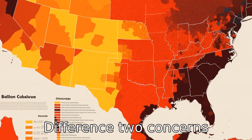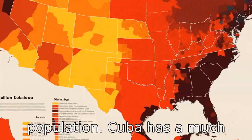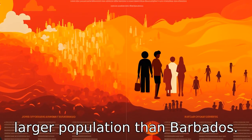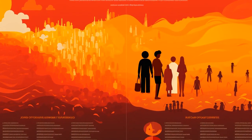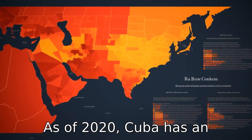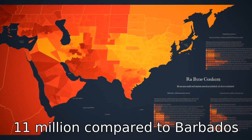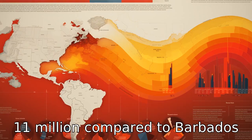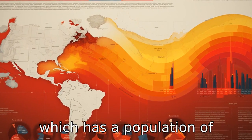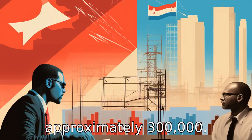Difference 2 concerns population. Cuba has a much larger population than Barbados. As of 2020, Cuba has an approximate population of over 11 million, compared to Barbados, which has a population of approximately 300,000.